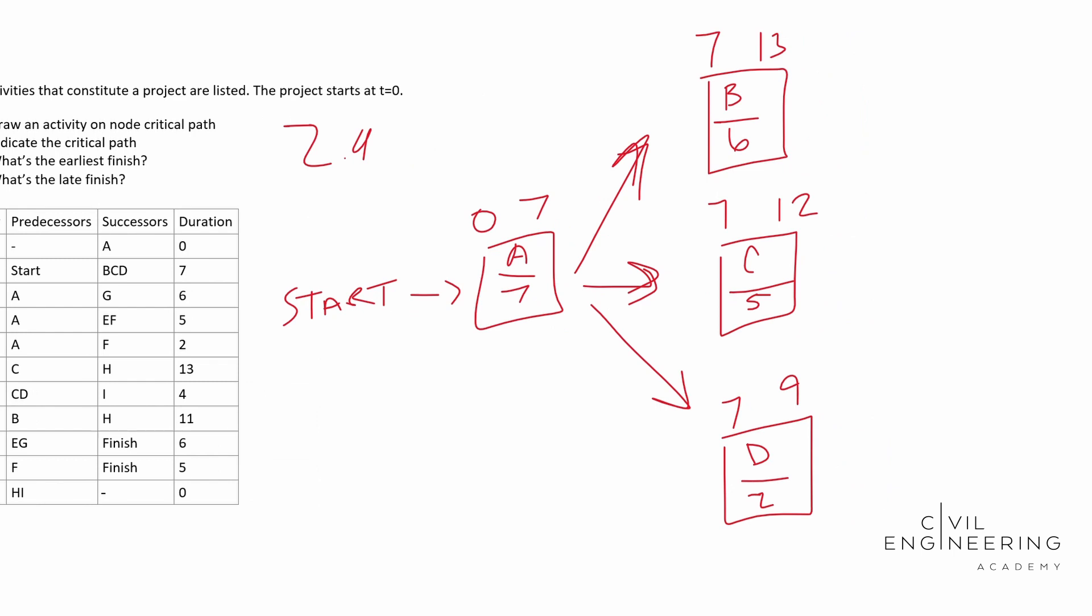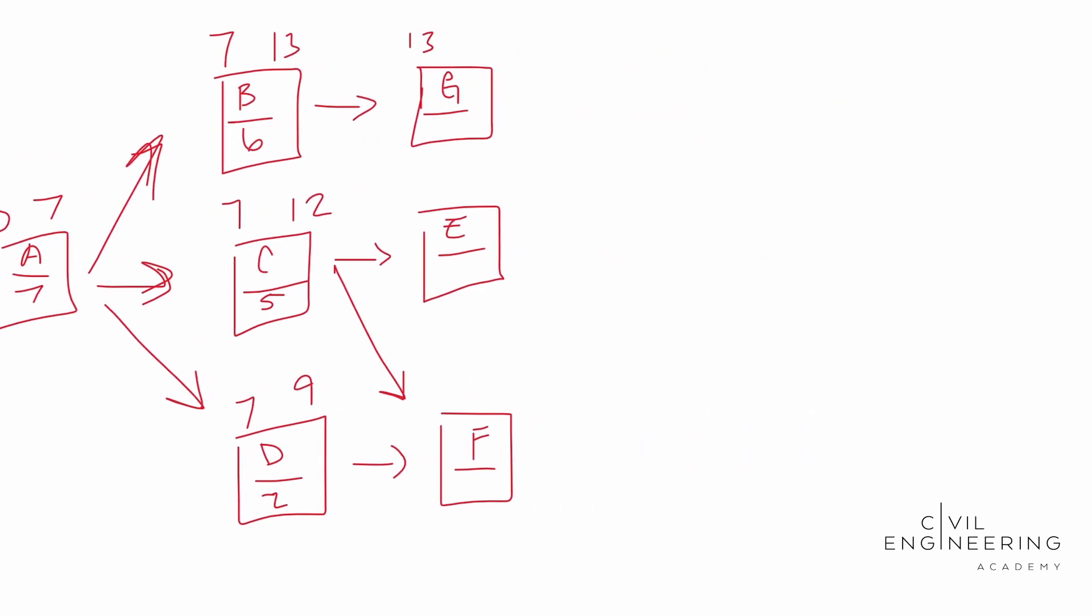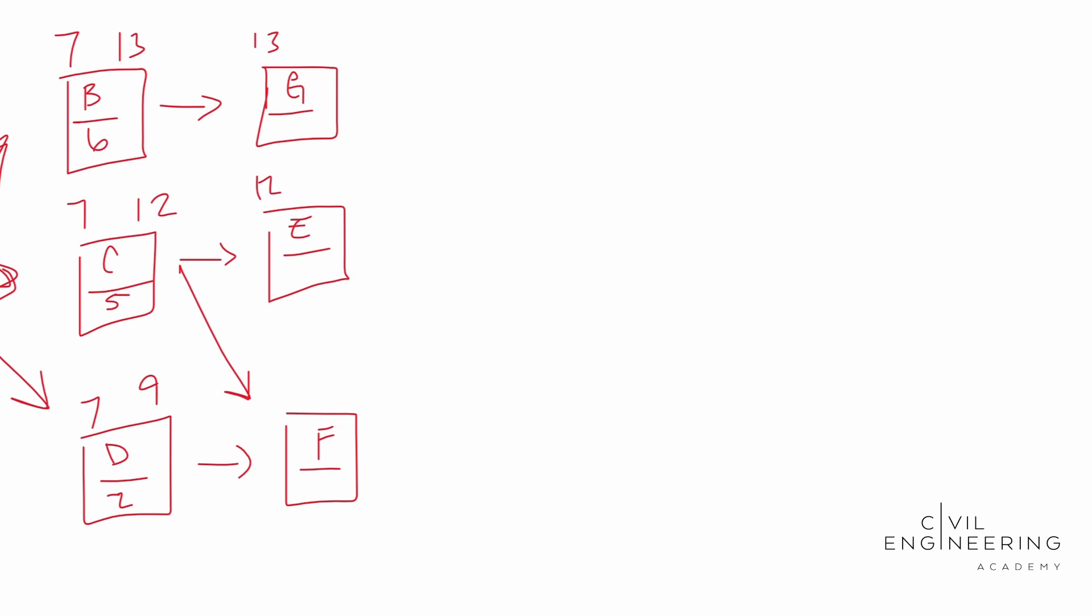So B goes to G. Let's go ahead and draw our G. C goes to E and F and D goes to F. All right. So simple enough. We can draw our arrows. Now this guy goes to that guy and that guy. B goes to G. So the soonest that G can start is on day 13. We're going to go ahead and lose the table here. All right. So the soonest that E can start is on day 12, because it's dependent on when C gets finished. So as far as F goes, it has two contributing factors. It has C and it has D. Its earliest start is going to be on day 12. And the reason why is because F cannot start until D and C are completed. So its earliest start is 12.